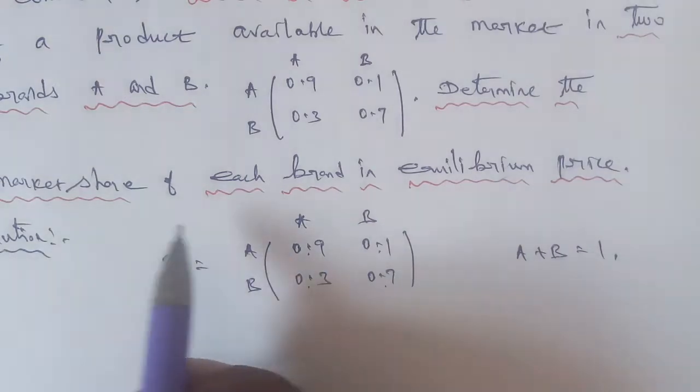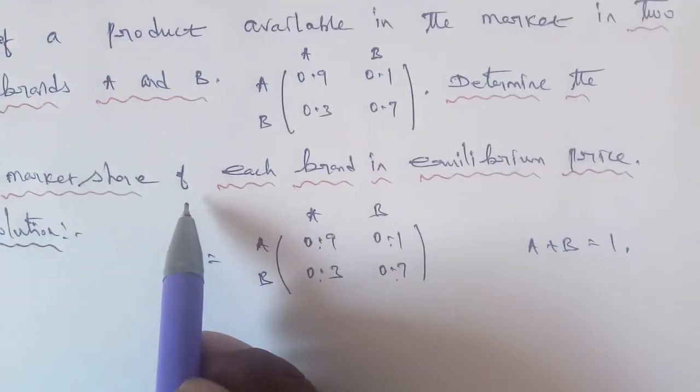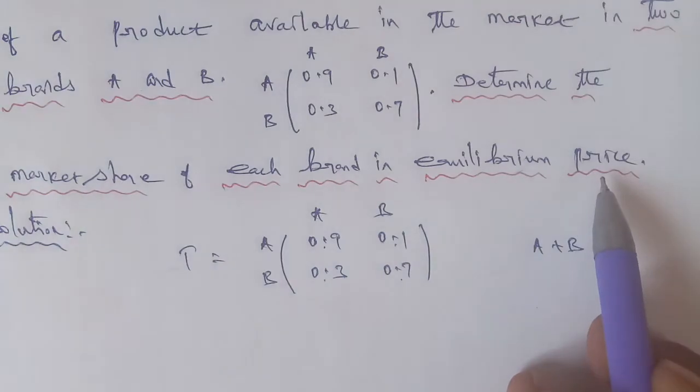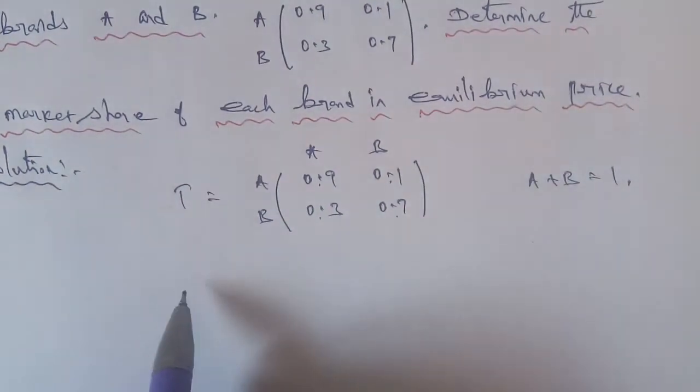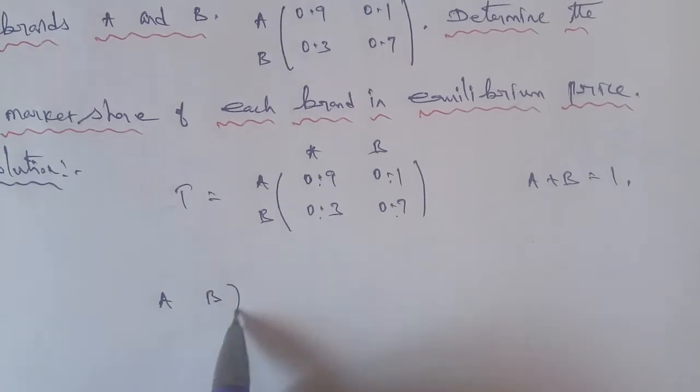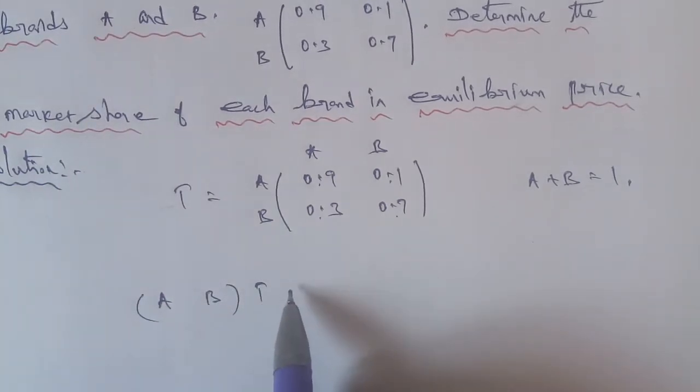Next, determine the market share of each brand in equilibrium price. In the equilibrium price, the condition is (A, B) times the transition matrix capital T equals (A, B).